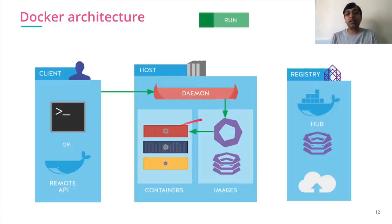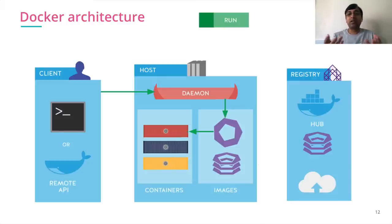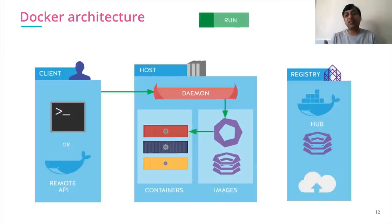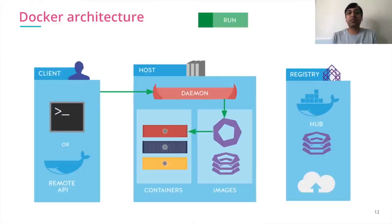In a way, images are one-time artifacts and you can spin up any number of containers from one image. If you look at the analogy of class and objects — objects are instances of classes. In a similar way, containers are instances of images in the Docker world. That's how the Docker architecture works with client-server and registry as a central repository.